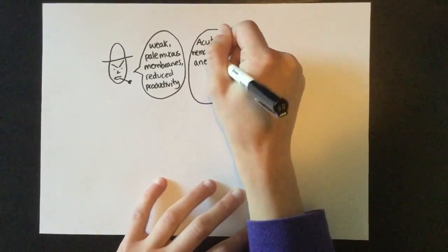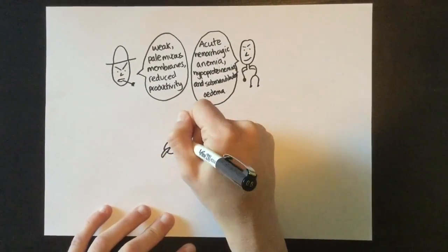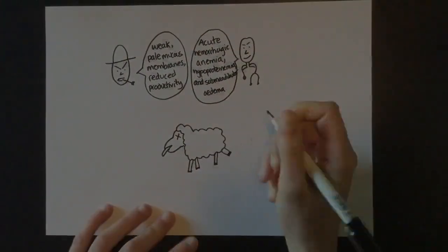The vet came out and used big words saying that the sheep have acute hemorrhagic anemia, hypoproteinemia, and submandibular edema. Oh no! What's that noise?